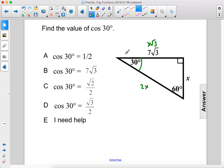Since this side is x times the square root of 3, that means x is 7. So this side is 7 and this side is 14.